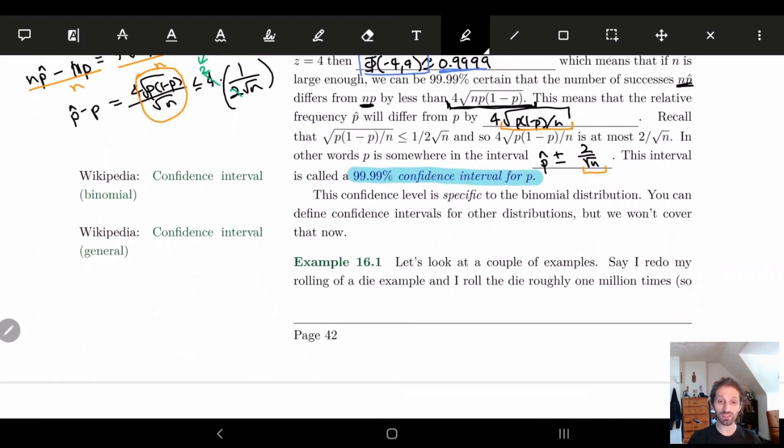So this confidence level is specific to the binomial distribution. We can't do it for other distributions, not necessarily for now. We will look at things potentially later on, but for now, this is all we have. So that's it. So if I change my z, if my z changes to something else, then my percentage is going to change and I'm going to have a slightly different thing. So I'm going to stop here for now and we'll look at an example in the next video. Thank you.